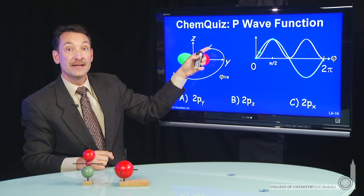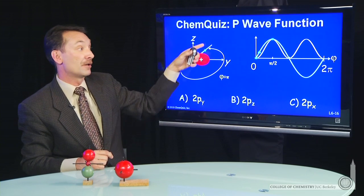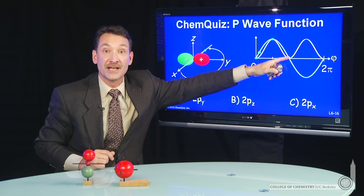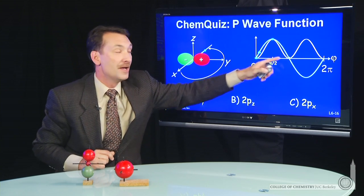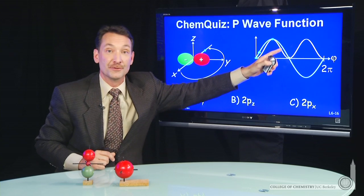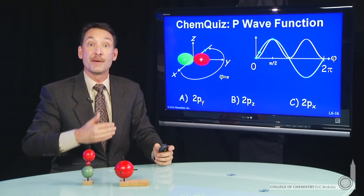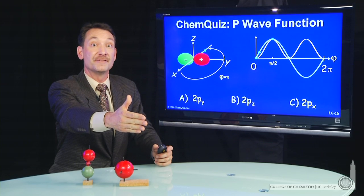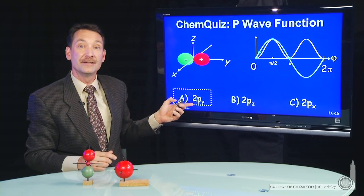And I can continue around. I can let phi go to pi. I'll come along to the negative x-axis. Of course, anywhere along the x-axis, the wave function has to go to 0. And the square of the wave function goes to 0. So these values of the wave function psi as a function of the parameter phi, the angle from the positive x-axis, describe a 2py orbital.